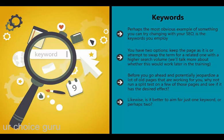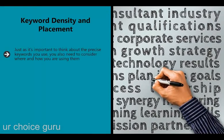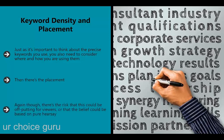Is it better to aim for just one keyword or perhaps two - maybe a whole bunch? Do long-tail keywords work better than highly popular ones? All of this is open to experimentation. Keyword density and placement: just as it's important to think about the precise keywords you use, you also need to consider where and how you use them. Optimal keyword density is a fraught subject, with some creators saying 1% is more than enough and others recommending as much as 3%. Popular opinion tells us that keywords in the opening and closing paragraphs or in H2 headers are more likely to gain Google's attention - but there's a risk this could be off-putting for viewers, so test it for yourself.